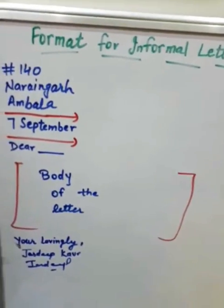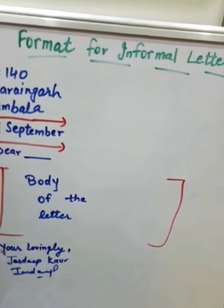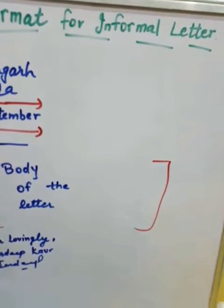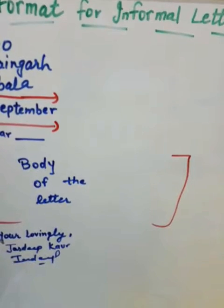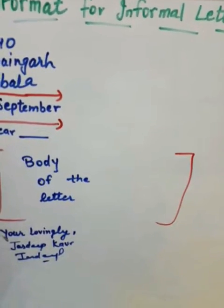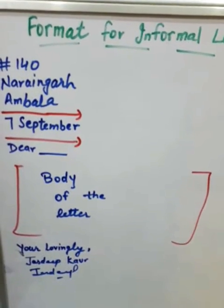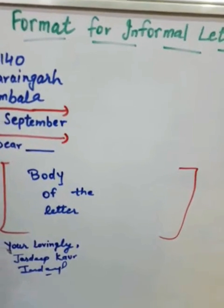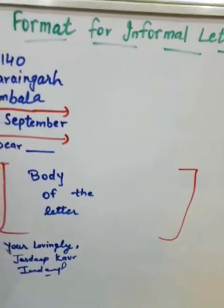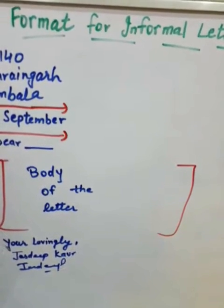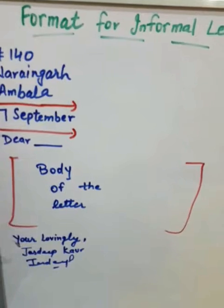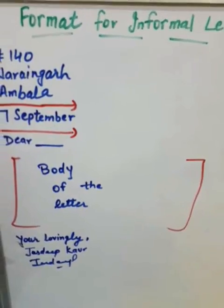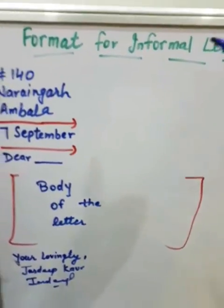Good morning class. Today we will learn the format for informal letter. We have already done formal letter — we write to our principal, school principal, and in any office. Formal letters are basically official letters. But informal letters are casual letters that we write for our personal purpose, for personal relationships — to our family or to our friends, like mother, father, uncle, aunt, and friends.